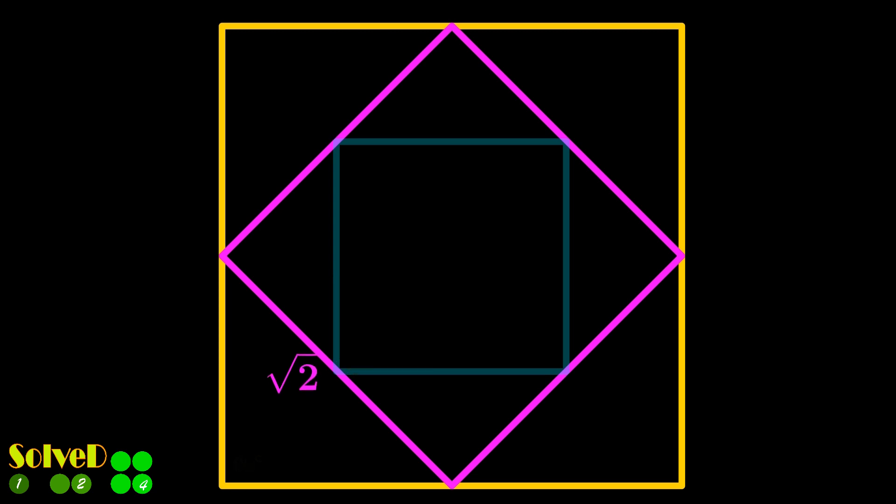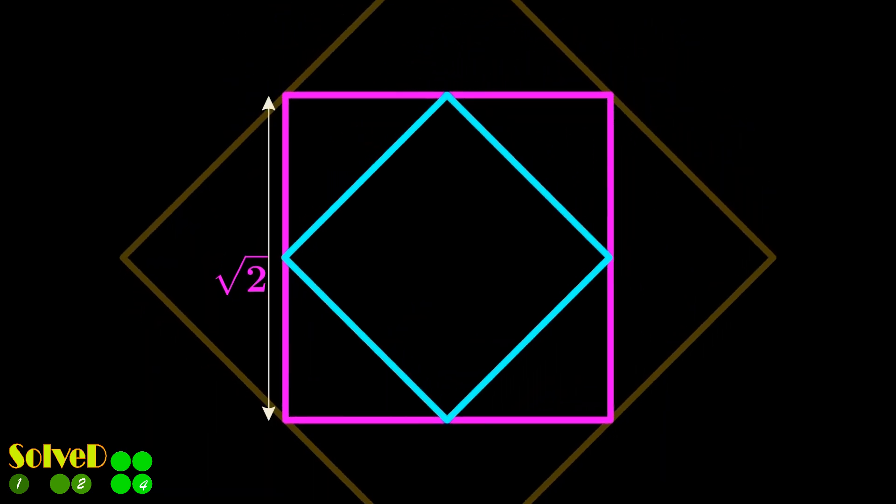Now let's repeat this process for the third square. Consider this right-angled triangle.